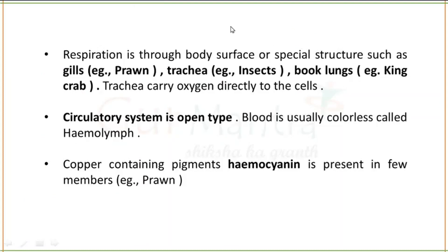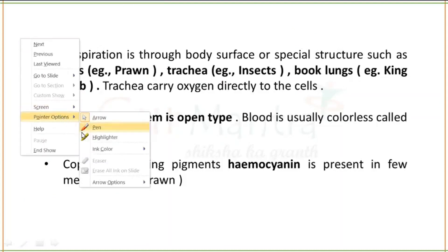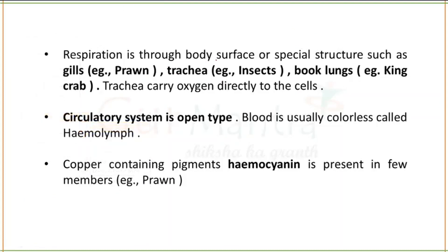Respiration is through the body surface and special structures. Gills are present in prawns. Trachea is used for respiration in insects. Book lungs are present in king crab. Trachea carries oxygen directly to all cells — this is an important point to remember.